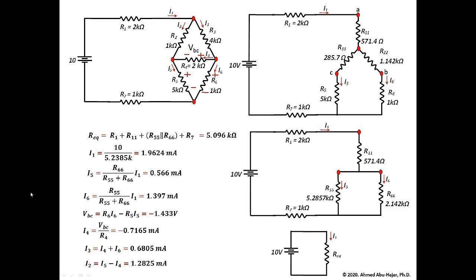In summary, when you have a circuit with delta-connected resistors that are neither in series nor in parallel, you convert the delta to a Y connection. This allowed us to find R equivalent, solve for I1, and work all the branch currents back using current dividers and KCL/KVL. This circuit will also be simulated in B-SPICE to validate these values in a companion video. Thank you, and good luck to you.